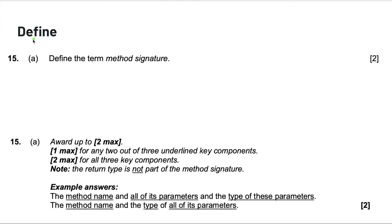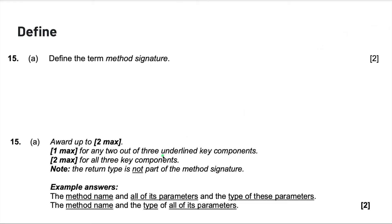Next, define. Define is pretty straightforward — for example, define the term method signature. How you answer depends on the point value. If it's two points, there are maybe two pieces of information to give about the term. If it's one point, it's just a one-sentence answer.